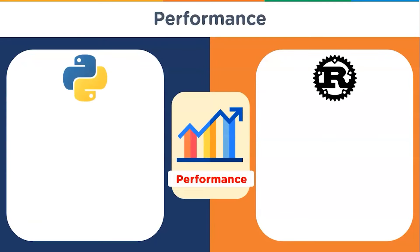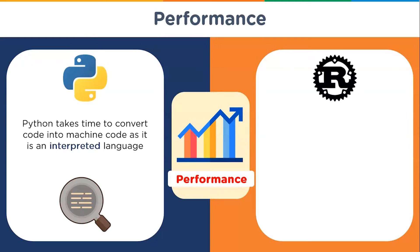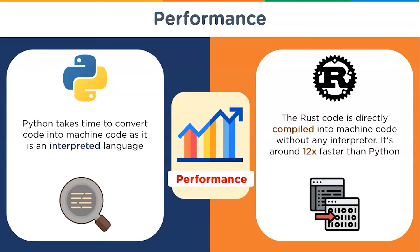When we talk about performance, Rust takes the piece of cake. Python takes time to convert code into machine code — being an interpreted language, it interprets code line by line. Rust provides high performance and security compared to Python; the Rust code is directly compiled into machine code and does not require any virtual machine or interpreter. It is around 12 times faster than Python and ensures proper memory management, checking it during compilation.